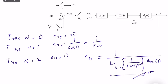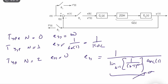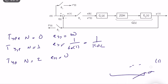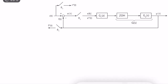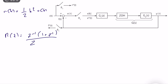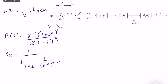Now the unit quadratic (acceleration) input: r(k) = ½k²·u(k), with R(z) = z⁻¹/(1 − z⁻¹)³. Following the same analysis, the steady-state error equals 1 / (lim_{z→1} (z−1)^(n−2) · G_dc(z)).